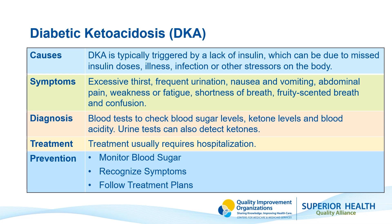DKA is typically triggered by a lack of insulin, which can be due to missed insulin doses, infections, or other stressors. Symptoms develop quickly and can include excessive thirst, frequent urination, nausea, and vomiting. Diagnosis involves blood tests to check blood sugar levels, ketone levels, and blood acidity. DKA is considered a medical emergency and treatment requires hospitalization with fluid and electrolyte replacement.